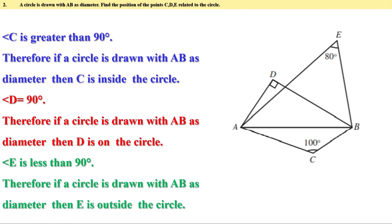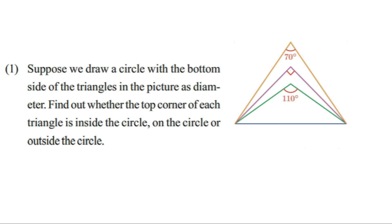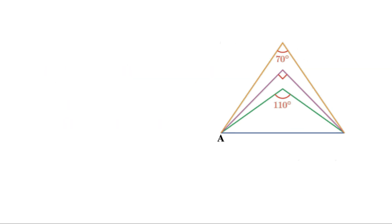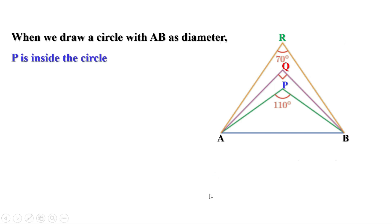Now let us do the problems of page 42 of the textbook. First problem: suppose we draw a circle with the bottom side of each triangle in the picture as diameter. Find out whether the top corner of each triangle is inside the circle, on the circle, or outside the circle. Angle P is more than 90 degrees, so P is inside the circle. Angle Q is 90 degrees, so it is on the circle. And angle R is less than 90 degrees, therefore it is outside the circle.